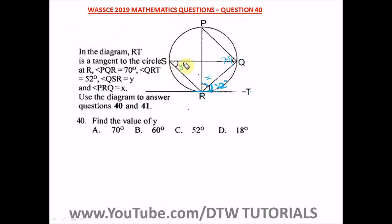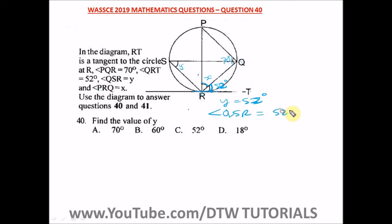This part is one segment of the circle and this other part is another segment. So this angle of 52 degrees is equal to y. Therefore y equals 52 degrees — that is, angle QSR equals 52 degrees. You can see how important it is to know your circle theorems. Let's go to the next question, which requires another circle theorem.